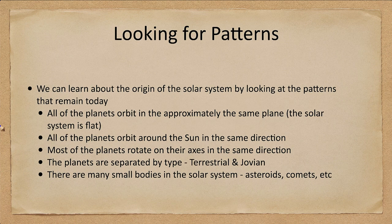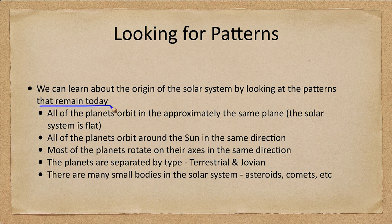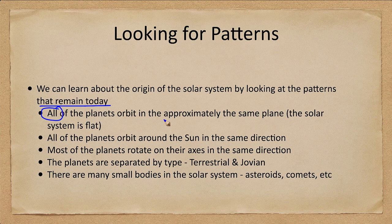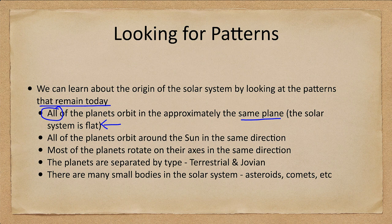We start out by looking for patterns. How do we learn about things? Well, let's look at the patterns that we see, the patterns that are left over and remain today in our solar system. One thing we know is that all of the planets orbit in approximately the same plane, meaning the solar system is flat. If you draw the solar system on a piece of paper, that's a pretty good estimate of what it is like.